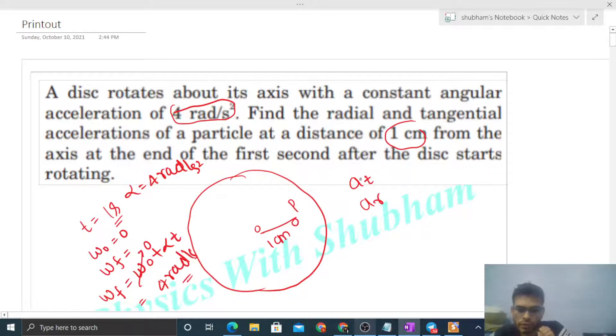So we have to find out tangential acceleration. So you can see what is the tangential acceleration, that is very simple, alpha into r. R is the perpendicular distance that is given 1 centimeter and alpha is angular acceleration that is also given 4 radian per second square. So just multiply the two, you will get 4 centimeter per second square, right?